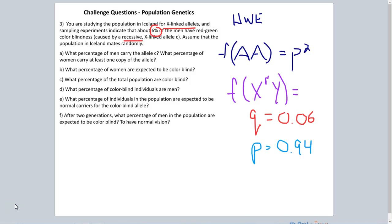So A asks us what percentage of men carry the recessive C allele? Well, the percentage of men that carry the recessive C allele is 6%. That's why 6% of them are colorblind.